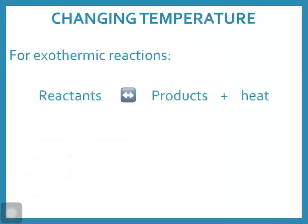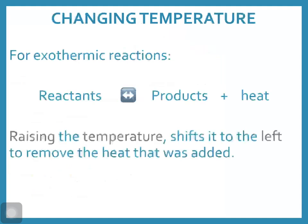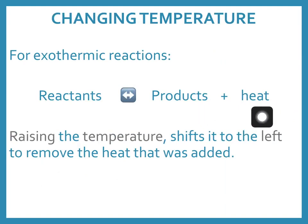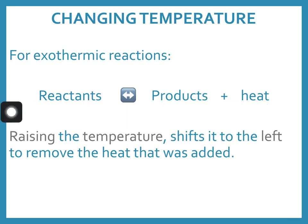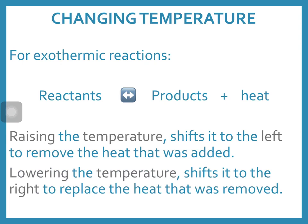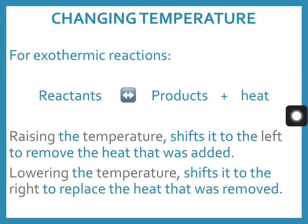Changing temperature depends on whether the reaction is exothermic or endothermic. For exothermic reactions, heat is one of the products. If we increase temperature, it's like adding product, so to counteract that, the reaction shifts towards the reactants to remove the added heat. If we lower the temperature, that's the same as removing some heat — a product — so the reaction shifts right towards the products to replace it. Temperature works similarly to concentration in terms of determining which direction equilibrium shifts.